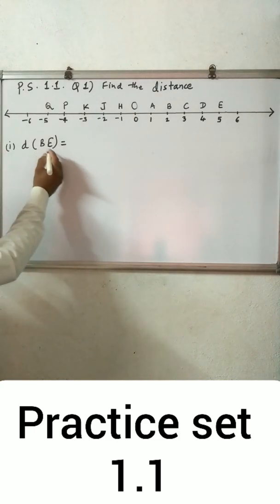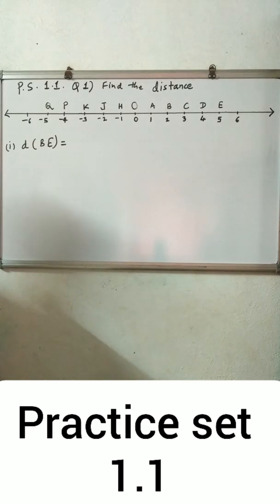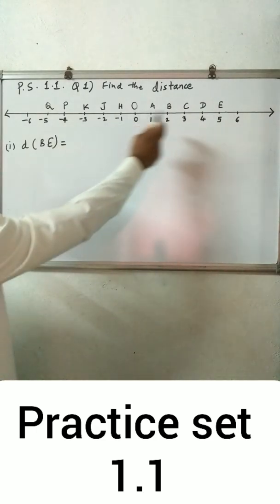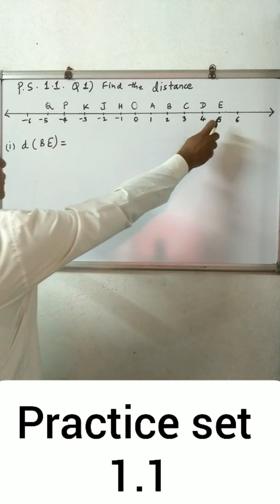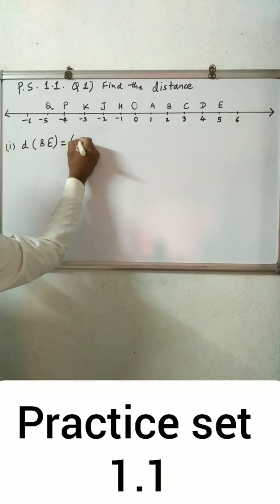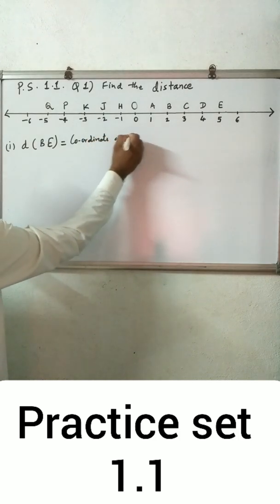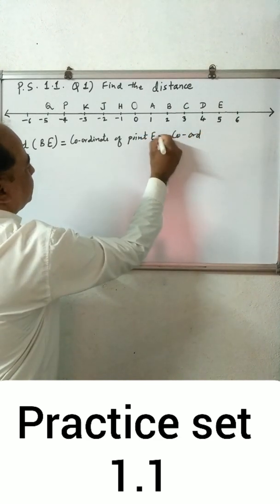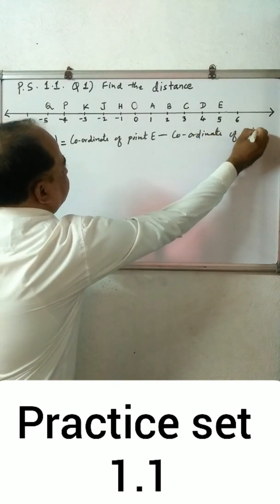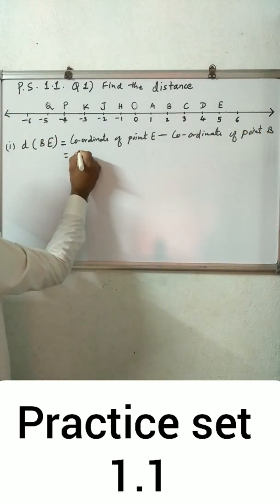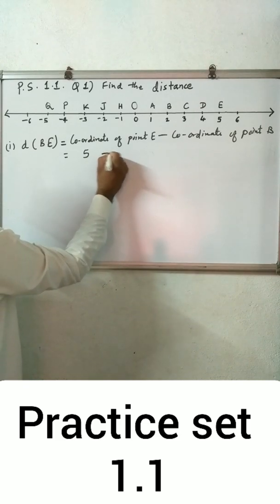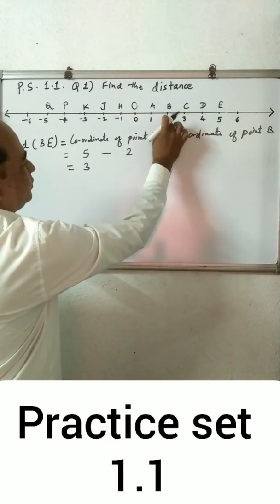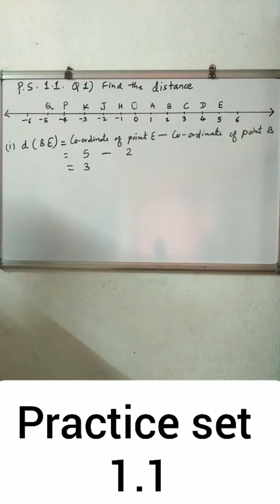First is distance BE. Coordinate of B is 2 and E is 5. The number on the right-hand side of the number line is greater. 5 is greater than 2, so distance BE equals coordinate of E minus coordinate of B: 5 minus 2 equals 3. So the distance between the two points is 3.